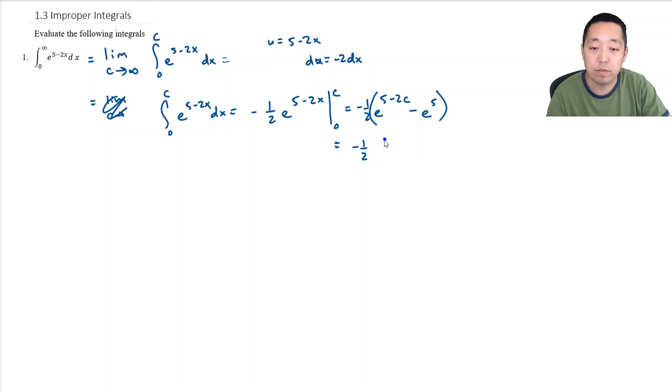I can factor out an e to the... This is going to be e to the 5, e to the minus 2c minus e to the 5. I can factor out an e to the 5. So it's negative 1 half e to the 5, e to the negative 2c minus 1. Now we're going to take the limit as c goes to infinity of this expression, negative 1 half e to the 5, e to the minus 2c minus 1.